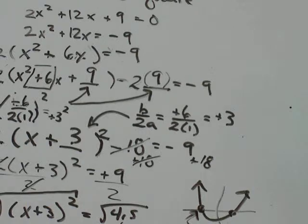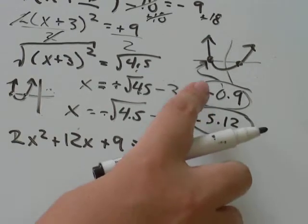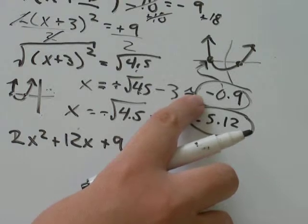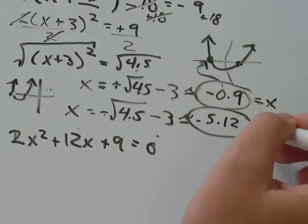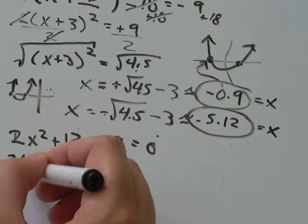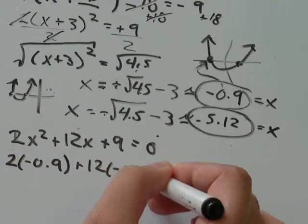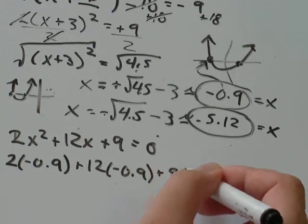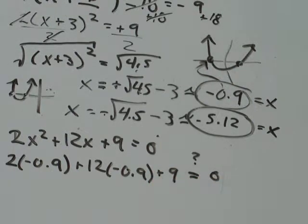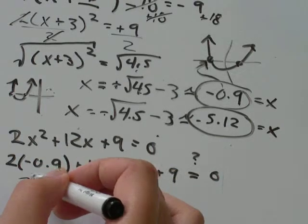2x² + 12x + 9 = 0. And then plug in one of your solutions. So I'll plug in negative 0.9. These are equal to x. So wherever I see an x, I'll put in negative 0.9. And I'll ask myself, does that still equal 0?